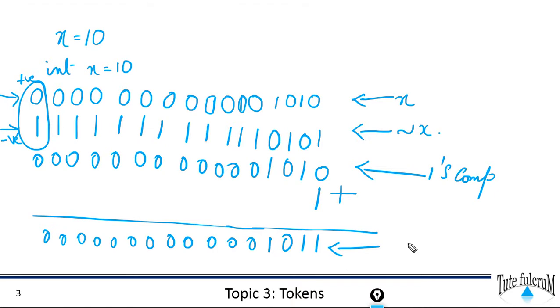So our result in binary will be equivalent to minus 11. So this will be our output when we apply the bitwise NOT operator onto 10, which is processed as a signed integer x.